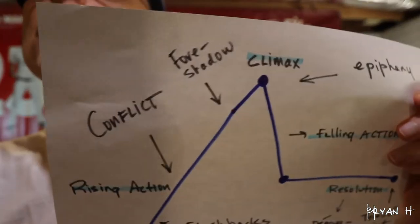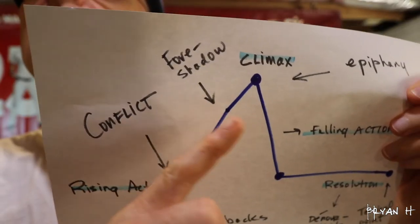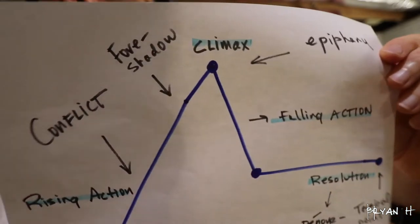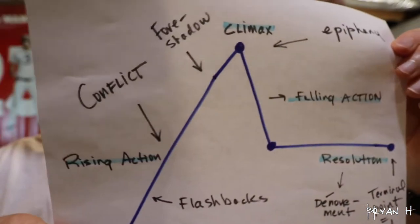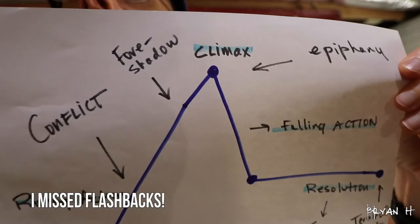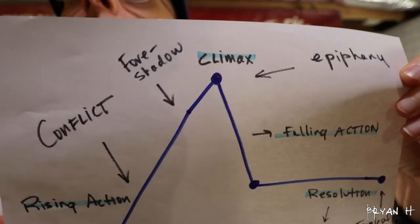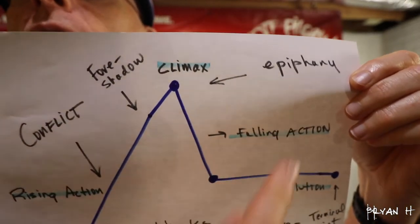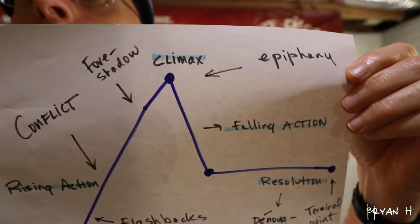As we move toward the climax of the story there might be some foreshadowing going on and other details that sort of lend information about the story. Then as the climax happens, we've got some epiphany happening where the character basically makes some discovery and their mind is kind of blown, more or less.